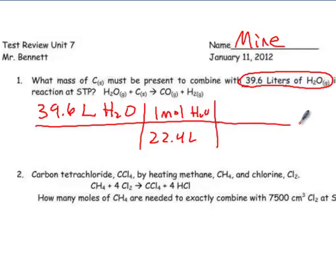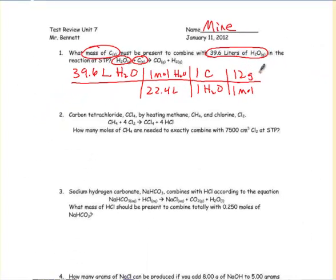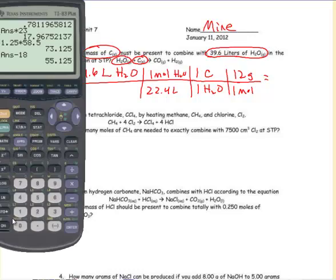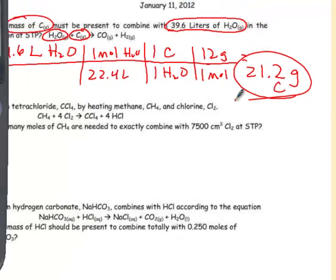All right, so now we're looking for H₂O is what we start with. It says what mass of carbon. So 1 mole of H₂O, 1 mole of carbon. It says what mass. So 1 mole is 12 grams, molar mass of carbon from the periodic table. So 39.6 times 12 across the top, divided by 22.4, and we get 21.2 grams of carbon.